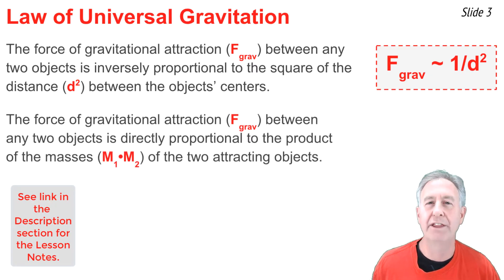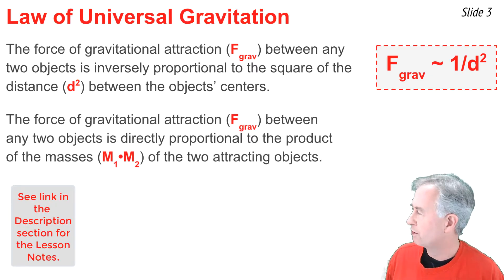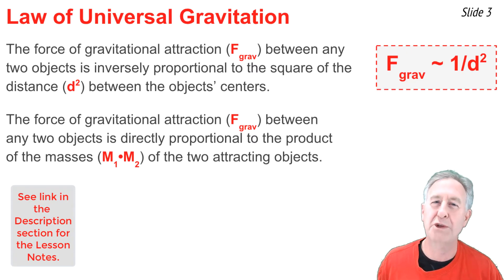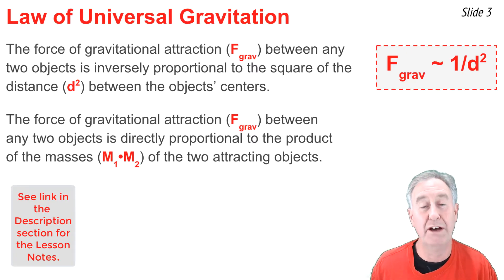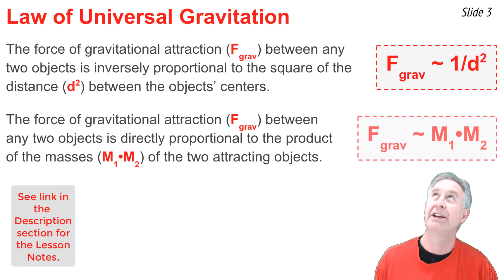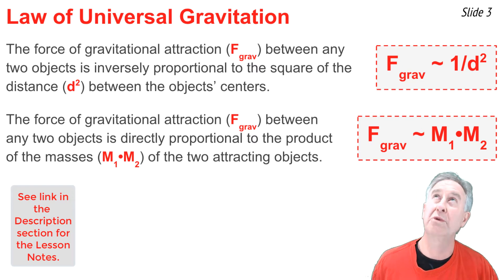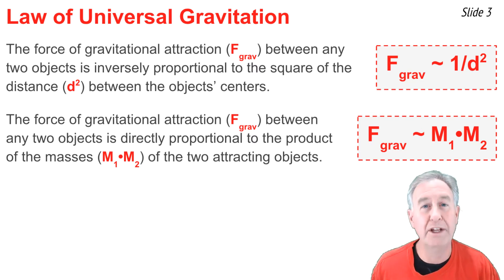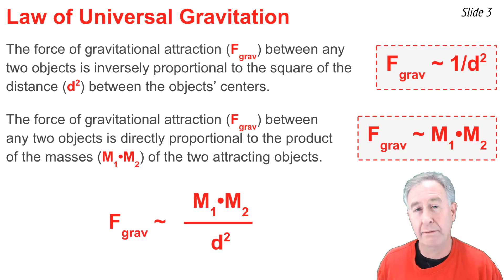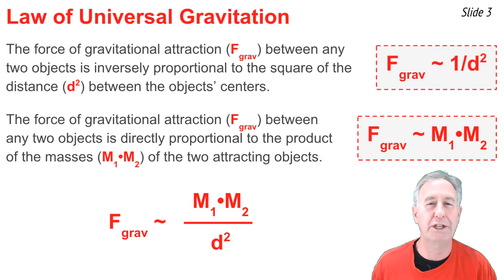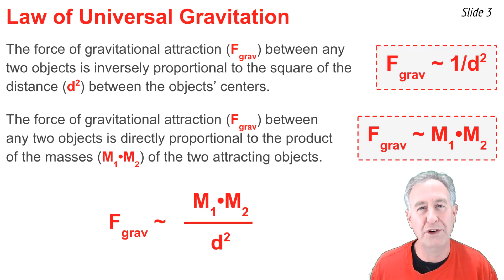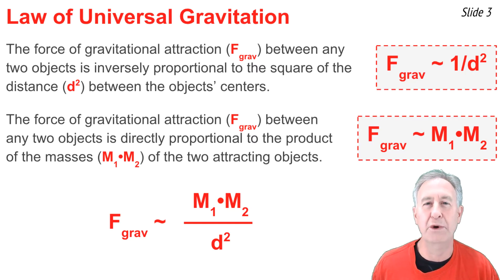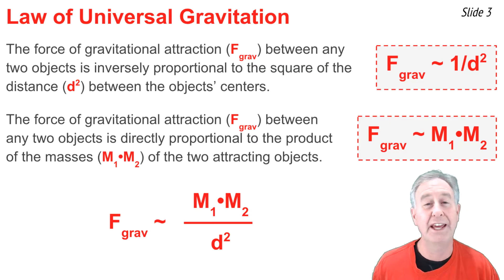This led him to the claim that the force of gravitational attraction between any two objects is directly proportional to the product of the masses of those two attracting objects. As a proportionality statement, it would look something like that. If we take these two proportionality statements and put them together into one, we're left with this: the force of gravitational attraction is directly proportional to the product of the masses and inversely proportional to the distance of separation squared. This is Newton's universal law of gravitation.